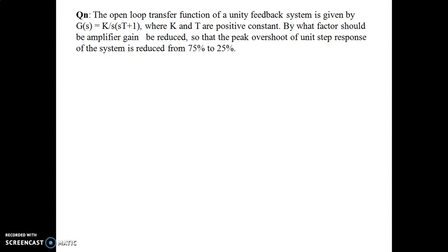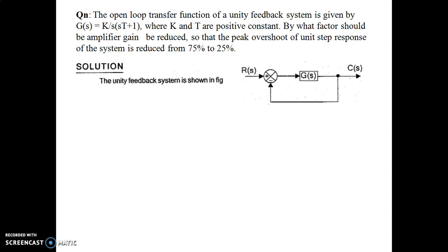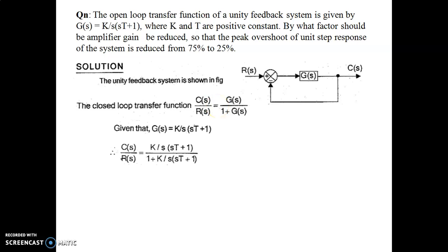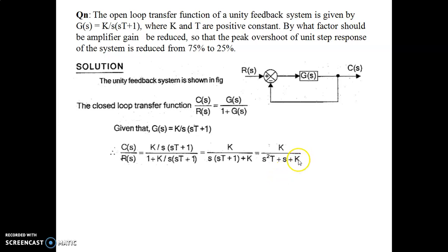For a unity feedback system, the closed-loop transfer function C(s)/R(s) = G(s) / [1 + G(s)]. Substituting G(s) = K / [s(sT+1)], we get K / [s(sT+1) + K], which simplifies to K / [Ts² + s + K].